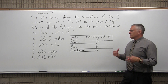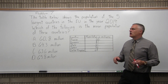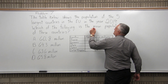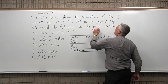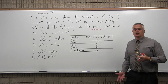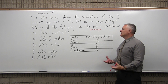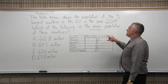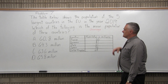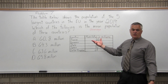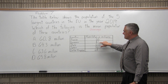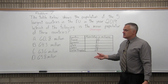So first of all, what are they even looking for? They say the mean population. Another phrase that people would probably be more familiar with is average. What is the average population? That's what they mean by the mean. It's really a more specific way of asking for the average, but it is what you would think of as average.